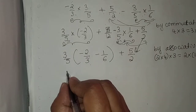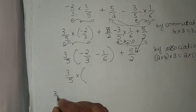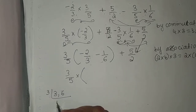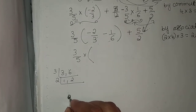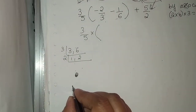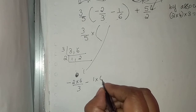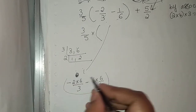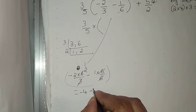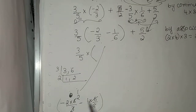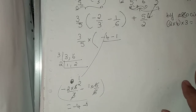Now we simplify: we take the LCM of 3 and 6. The LCM is 6. So inside the bracket: minus 2 × (6/3) minus 1 × (6/6). The 6s cancel: 3 ones are 3, so 2 by 3 gives 4, giving minus 4 minus 1. So we substitute: minus 4 minus 1, giving minus 5 over 6.